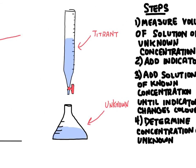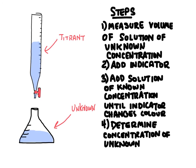But oftentimes we don't have that available, so another option is we can add something called an indicator to our solution of unknown. And the indicator is going to be a chemical that's not going to affect the concentration of our acid in any way, but it's going to change color when the acid is neutralized. And there's a lot of different types of indicators.